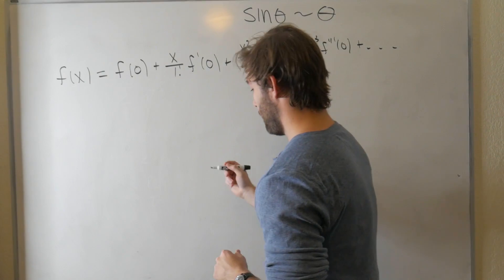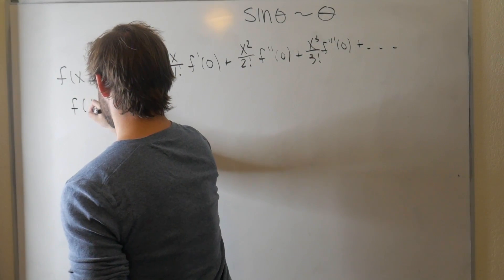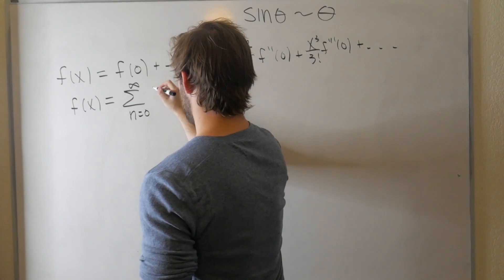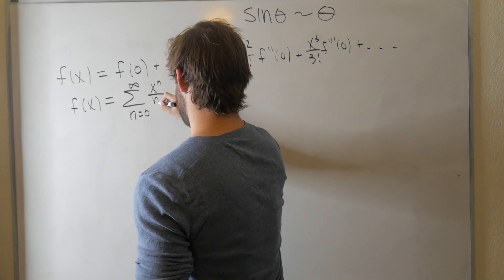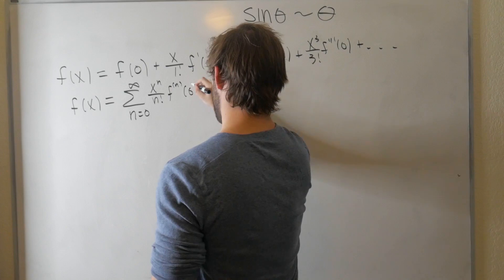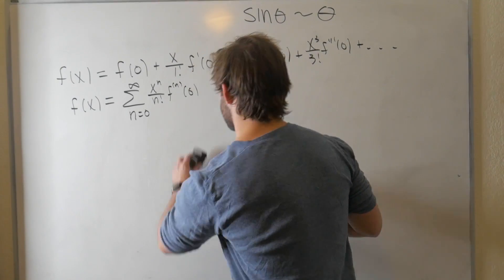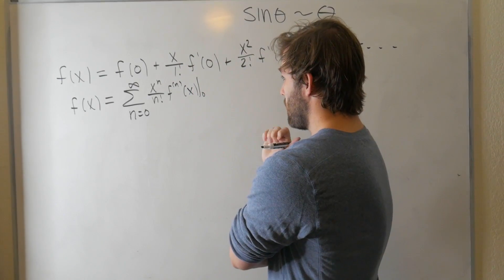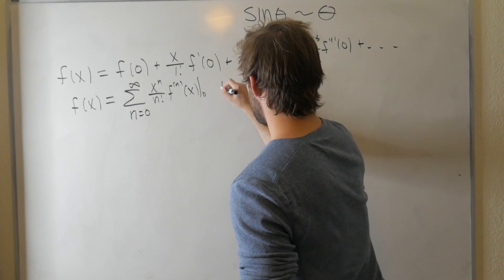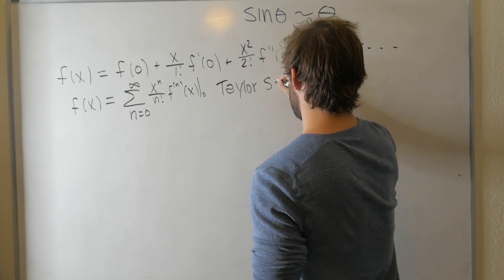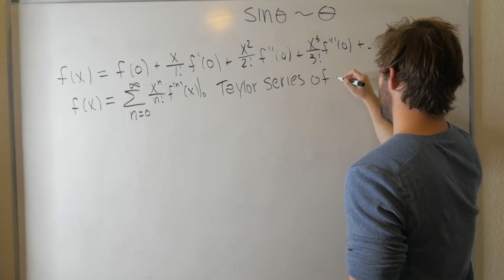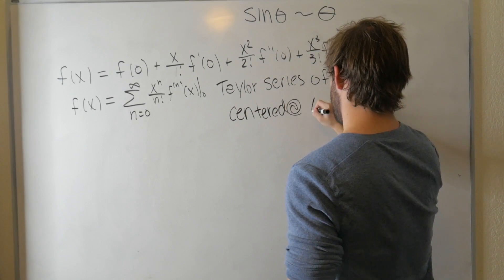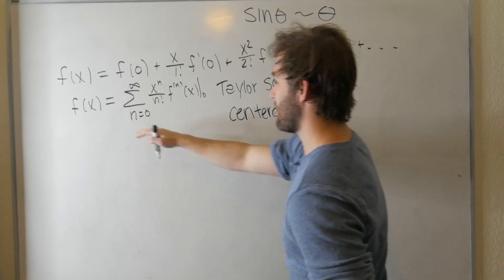So f of x is the function evaluated at that point. We're going to let that point be zero plus x divided by one factorial f prime of zero. I'm just writing the factorial to make it more suggestive plus x squared over two factorial f double prime of zero plus x cubed over three factorial f triple prime of zero. Well, you get the idea. This goes on forever. And if you let this go on forever, you will exactly recreate the function.